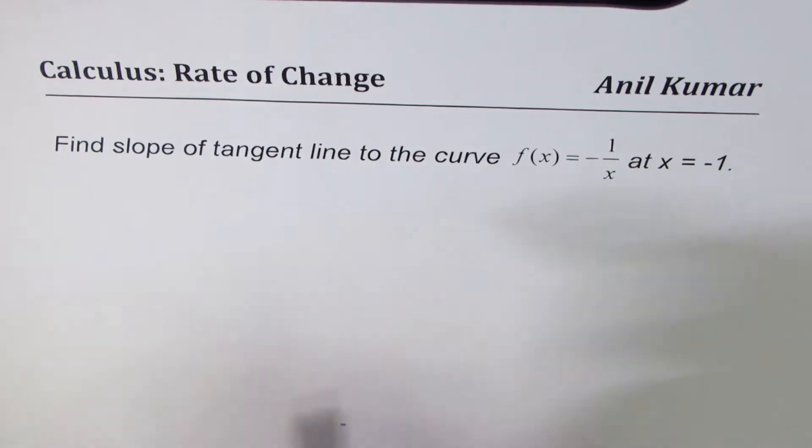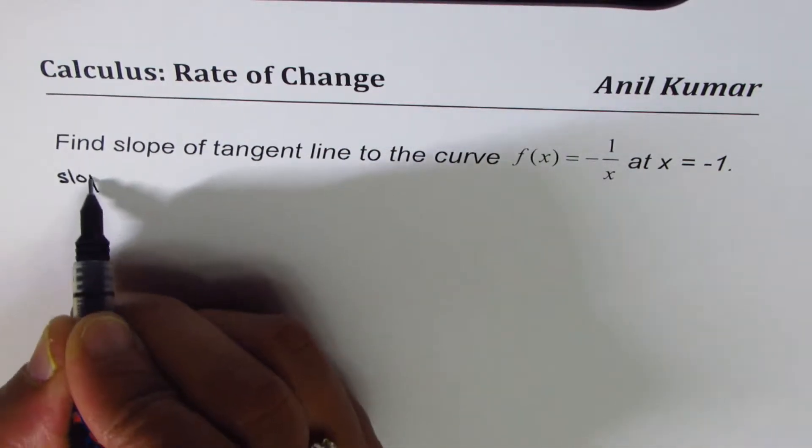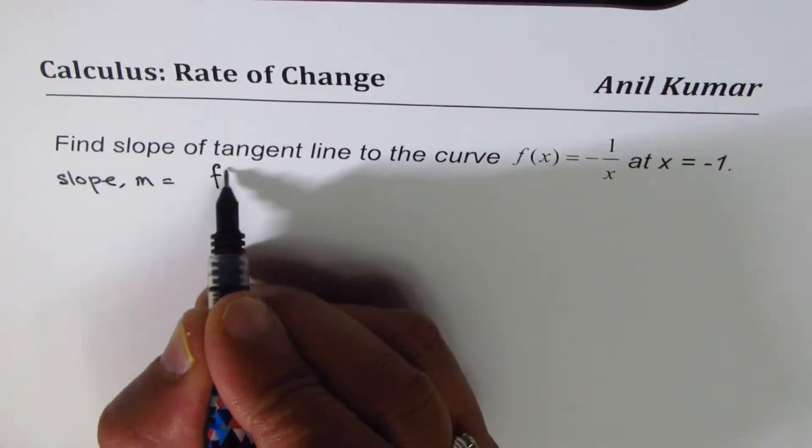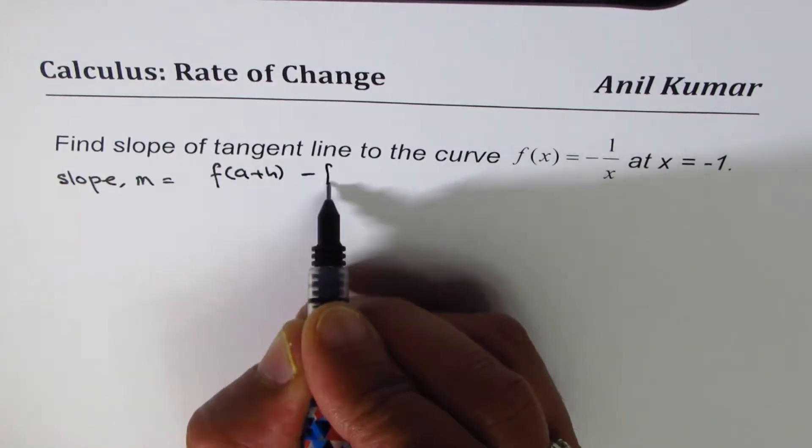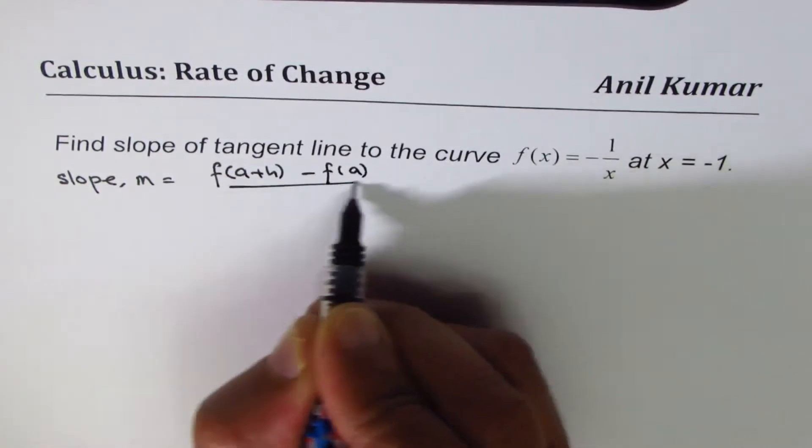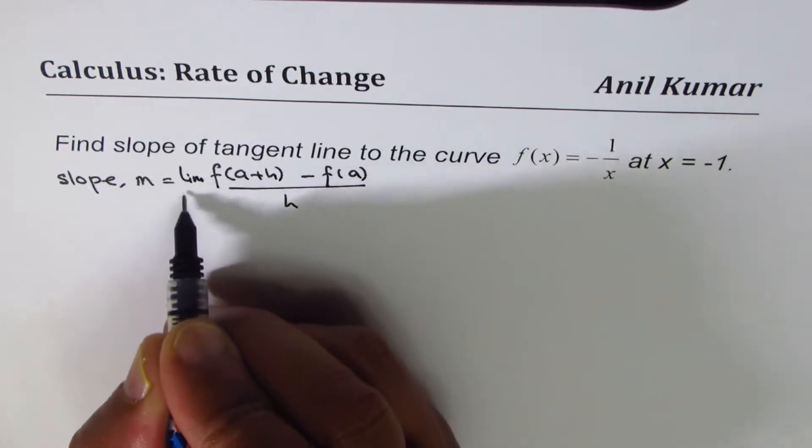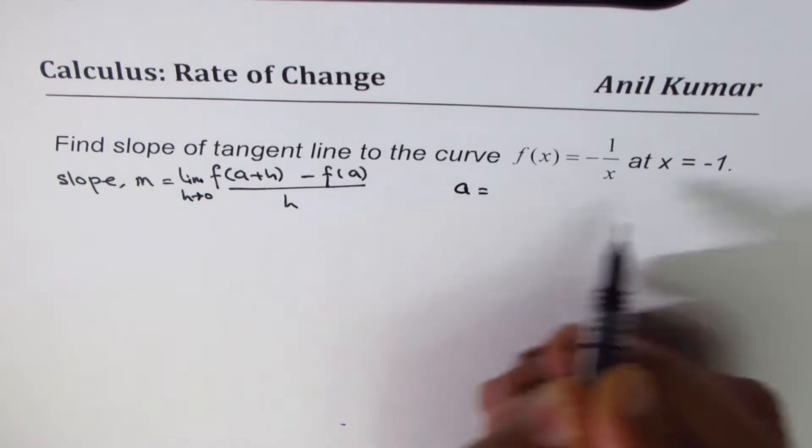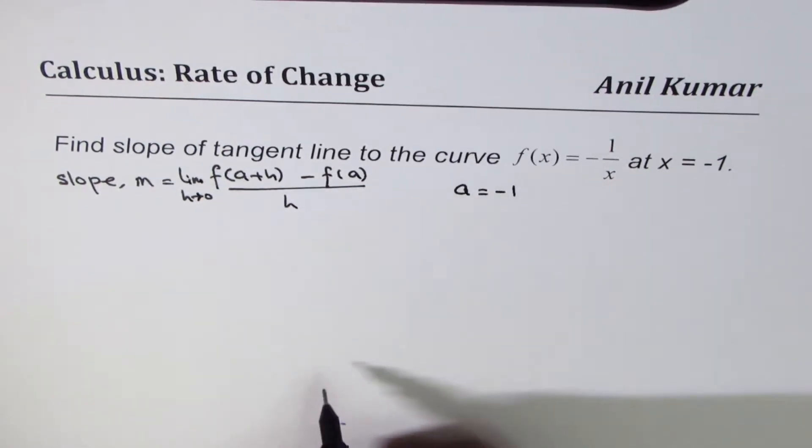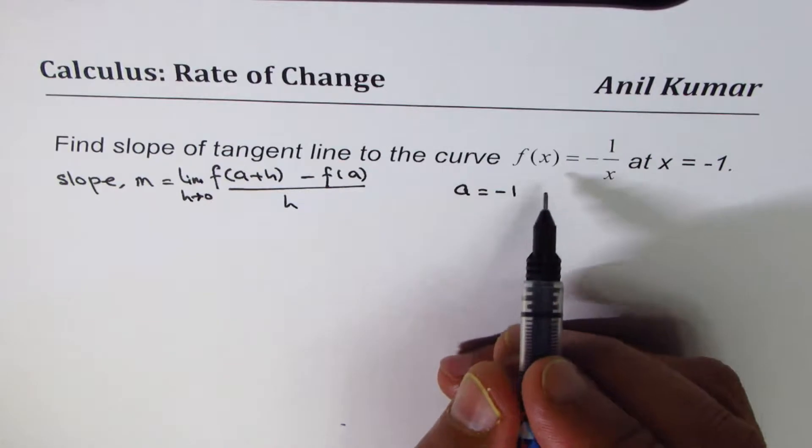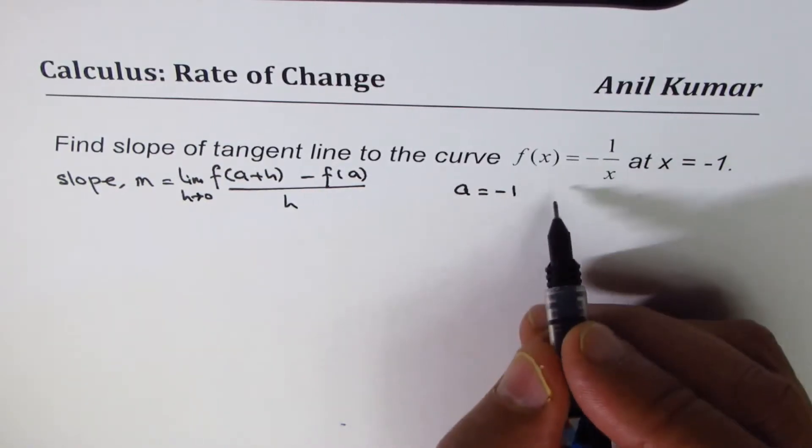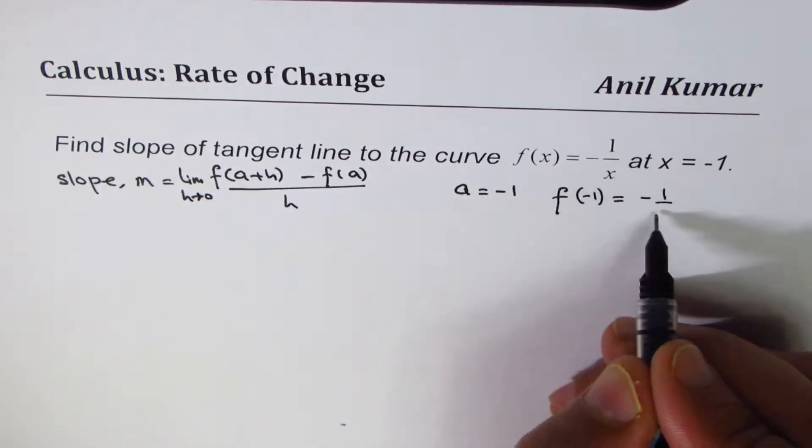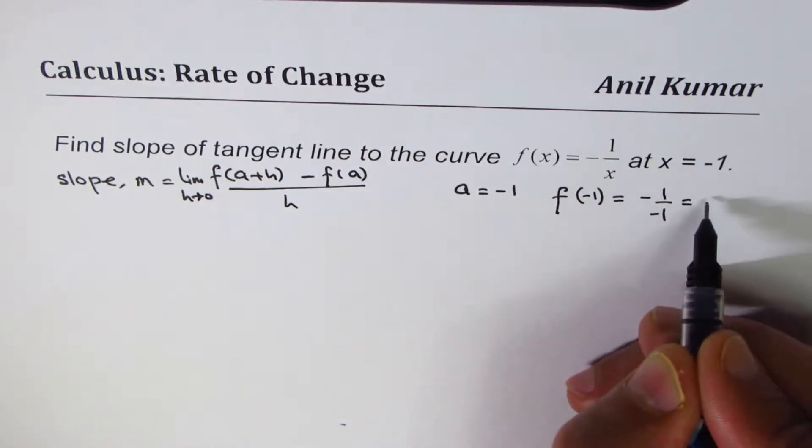So the slope m is equal to f(a+h) minus f(a) over h, where the limit h approaches 0. In our case, a is equal to minus 1. So let's find the value of this function at minus 1. f(-1) equals minus 1 over minus 1, which is plus 1.